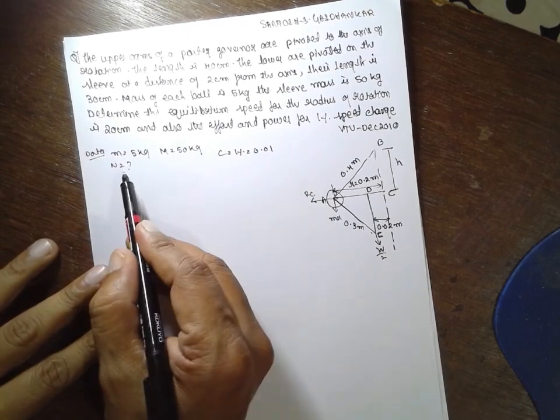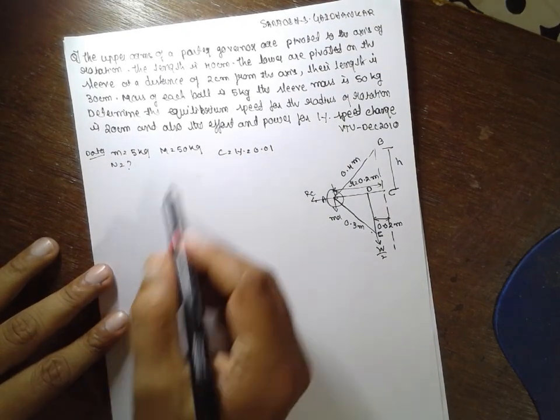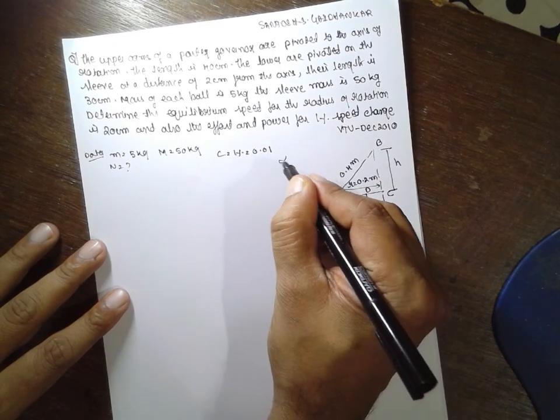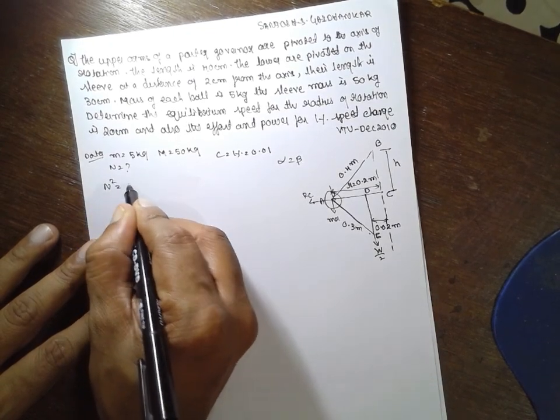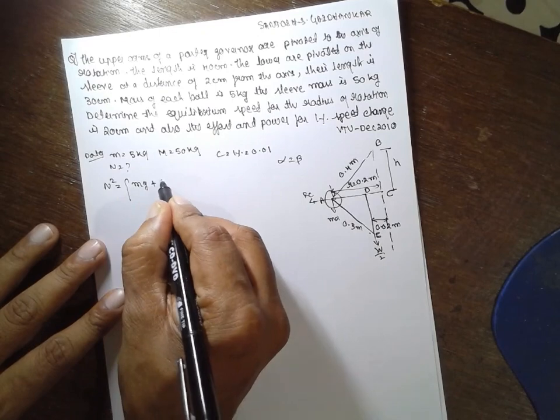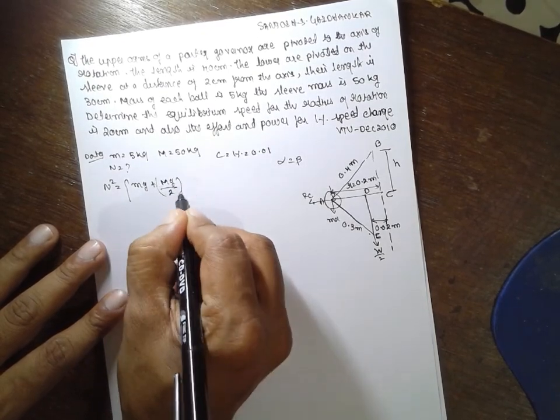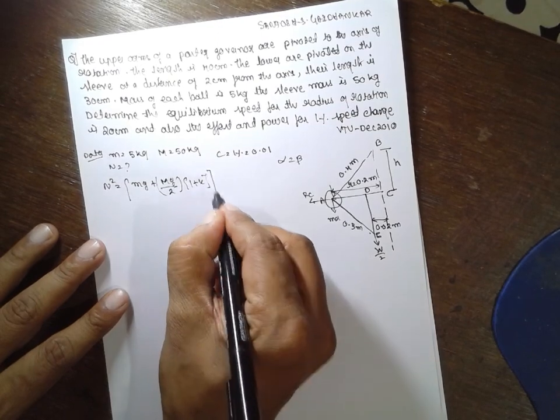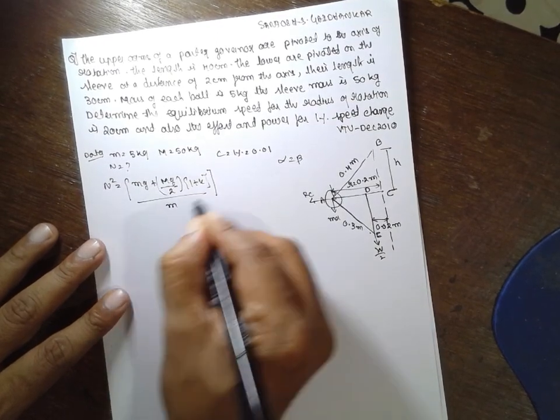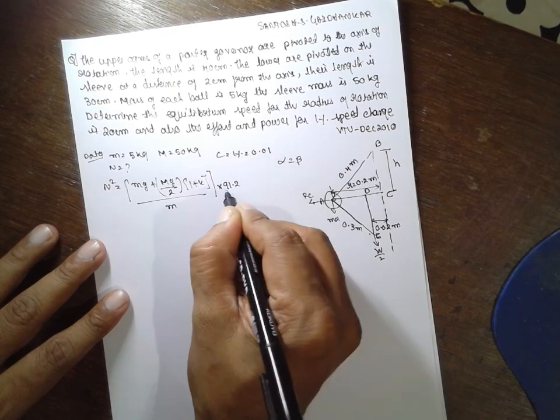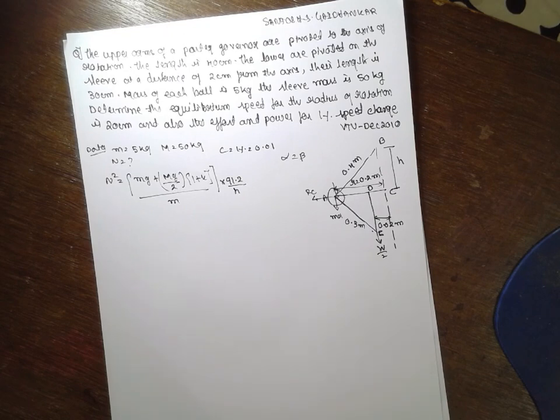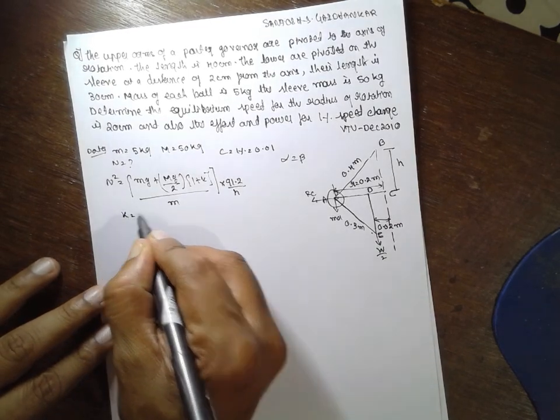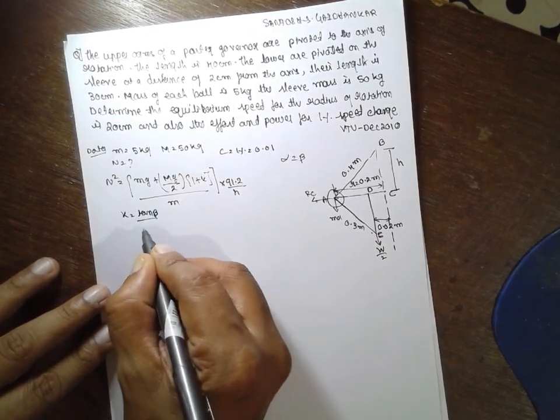The two extra formulas will become C. Before that one, find out the n value. There is no friction force. But here, alpha is not equal to beta. But you have to consider k value. n square is equal to mg plus mg by 2 into 1 plus k divided by m into 91.2 divided by h. Now, the unknowns are k. What is k? k is equal to tan beta divided by tan alpha.